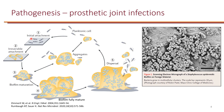The second step is irreversible attachment to the object by losing their flagella and producing biofilm matrix components. The third step involves maturation of cell clusters, which become several cells thick embedded in the extracellular polymeric substance matrix. Once the biofilm is fully mature, it provides an environment for the bacteria to grow where they are protected from antibiotics as well as from the host immune cells. The final step is the dispersion process, where bacteria are released from the biofilm, regain their flagella, and can continue to infect other cells in the host.